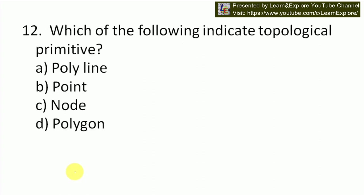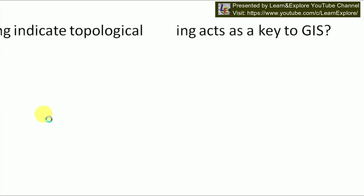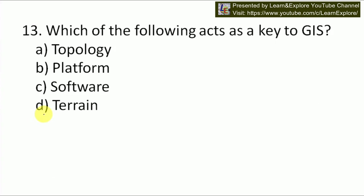Next question: which of the following indicates a topographical primitive — polyline, point, node, or polygon? Our answer will be C — node. In GIS, topological primitives include node, faces, and edges. Next question: which of the following acts as a key to GIS? Options are topology, platform, software, and train. Topology acts as a key to GIS, so our answer will be A.